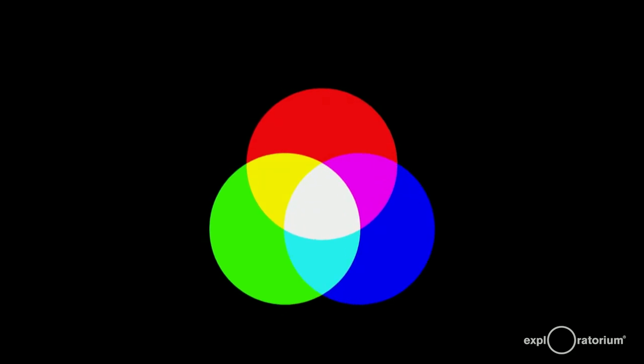Finally, when you mix all three colors of light, where they all overlap in the center, you get white. Red plus green plus blue makes white.